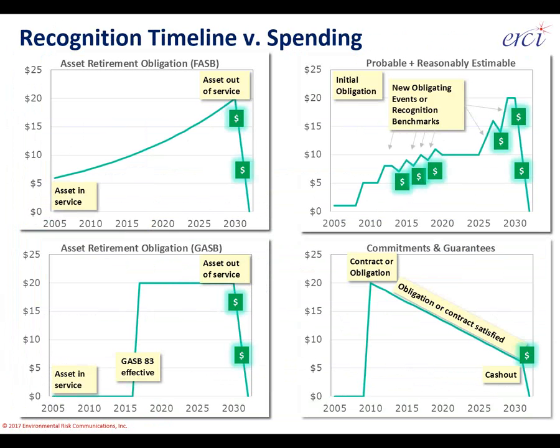For commitments and guarantees, it looks the opposite: the liability comes out of nowhere, is recognized when a contract or obligation comes into effect, and then goes away as that contract or obligation is satisfied — particularly with a cash-out at the very end. Sometimes the liability dissolves through spending, sometimes not. Counterparty risk can dissolve on its own when your counterparty gets healthier with no spending on your part.